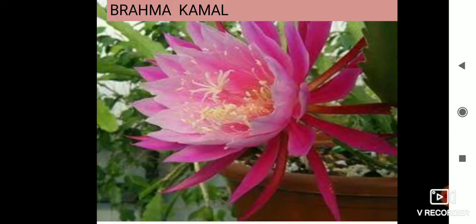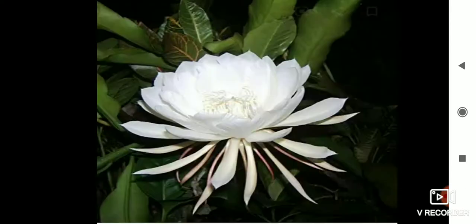This is the state flower of Uttarakhand — Brahma Kamal. This is the pink Brahma Kamal. It is also found in white, and it is the state flower of Uttarakhand. It looks like a lotus but does not grow in water. This is also white Brahma Kamal.